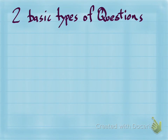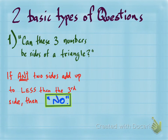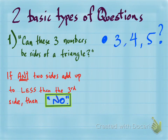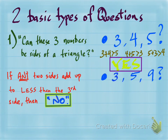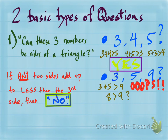Let's summarize the kinds of questions you'll be asked. The first type is: can these three numbers actually be the sides of a triangle? Add up any two sides and compare to the third. If any two sides add up to less than the third, that triangle cannot exist. For example, three, four, and five: three plus four is greater than five, four plus five is greater than three, and five plus three is greater than four — all true, so yes, a triangle with sides three, four, and five is possible. But for three, five, and nine: three plus five is eight, which is not greater than nine, so that triangle cannot exist.